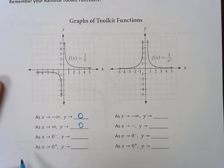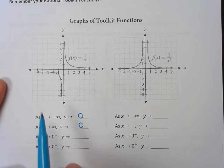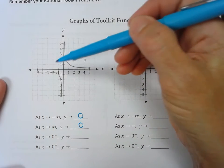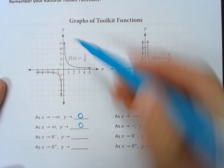As x gets closer to zero from the left, that's what that notation means. x is getting closer and closer to zero from the left, y is getting smaller. So y is going to negative infinity.